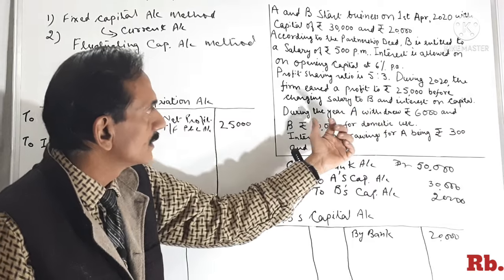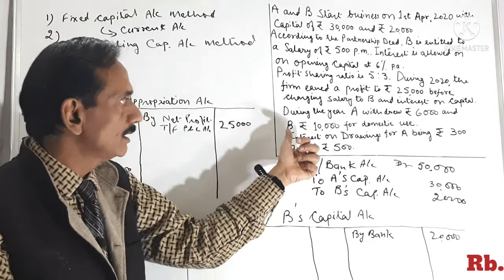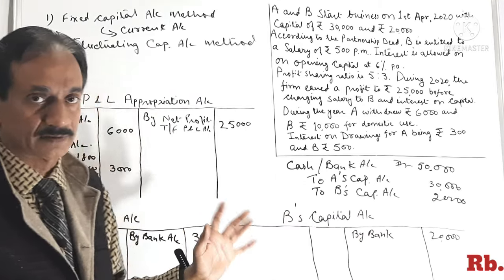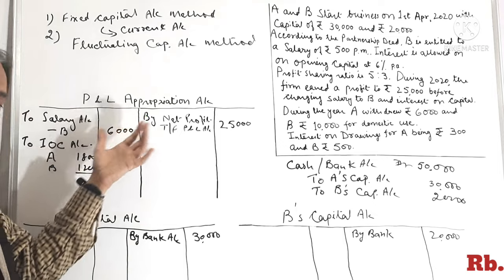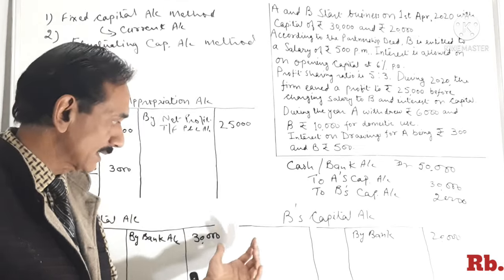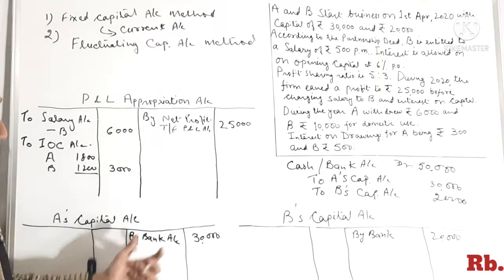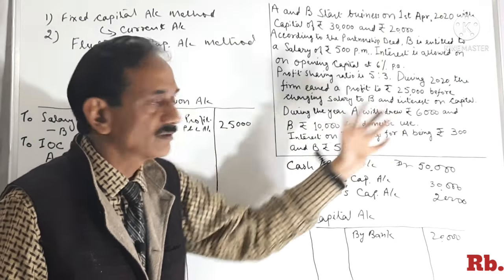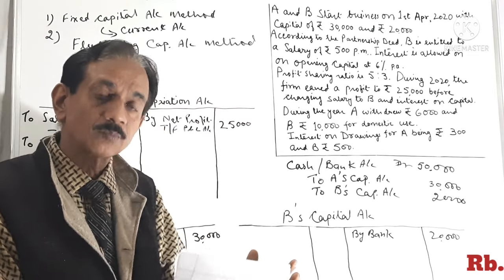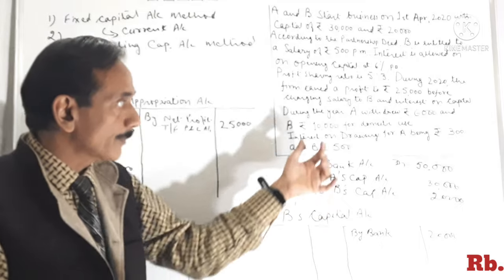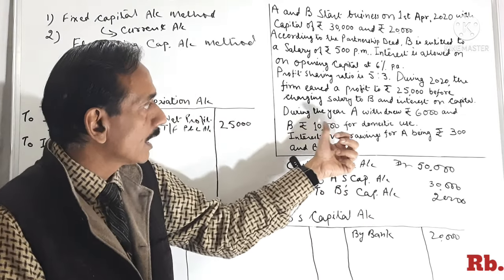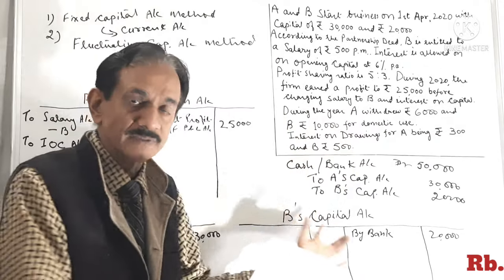During the year, A withdrew Rs.6,000 and B withdrew Rs.10,000 for domestic use — it means drawings: A's Rs.6,000 and B's Rs.10,000. Drawings jo hain yeh P&L Appropriations Account mein nahi aata. Students, drawings bhi do tarah ki hoti hain: ek drawings hoti hai jo partner apne profit mein se withdraw karta hai — jaise yahan A ne Rs.6,000 profit mein se withdraw kiya. Doosri drawing hoti hai jo capital mein se withdraw ki jati hai; us case mein hum capital ko minus kar dete hain. Yahan capital mein se withdraw nahi hua, profit mein se hua hai.